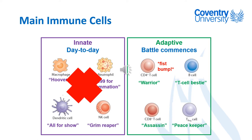The last cells we're going to think about are regulatory T cells — the peacekeeper cells. Once your immune system has got rid of the pathogen you've been infected with, it needs to stop working, because an immune system that continues working can start to cause damage to your own body. What regulatory T cells do is basically stop that immune response when it's no longer needed.